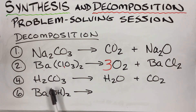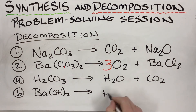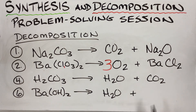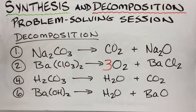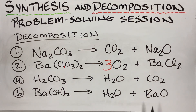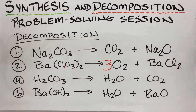Barium hydroxide is a base. Acids give water and a non-metal oxide; bases give water and a metal oxide — they're opposites. So Ba(OH)₂ breaks down into water plus barium oxide, BaO. Barium is two, oxygen is two — good formula. Checking balance: one Ba each side; two O's from hydroxide plus one O in BaO plus one in H₂O gives two O's total each side; two H's each side. Balanced.